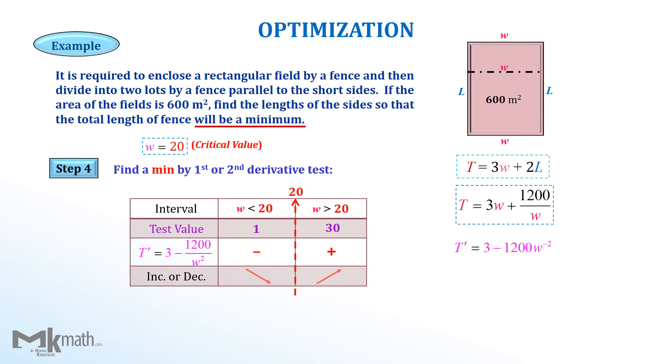Since the function is changing from decreasing to increasing at W equal to 20, there is a local minimum at W equal to 20. And there is only one critical value in this question, W equal to 20 makes the absolute minimum.